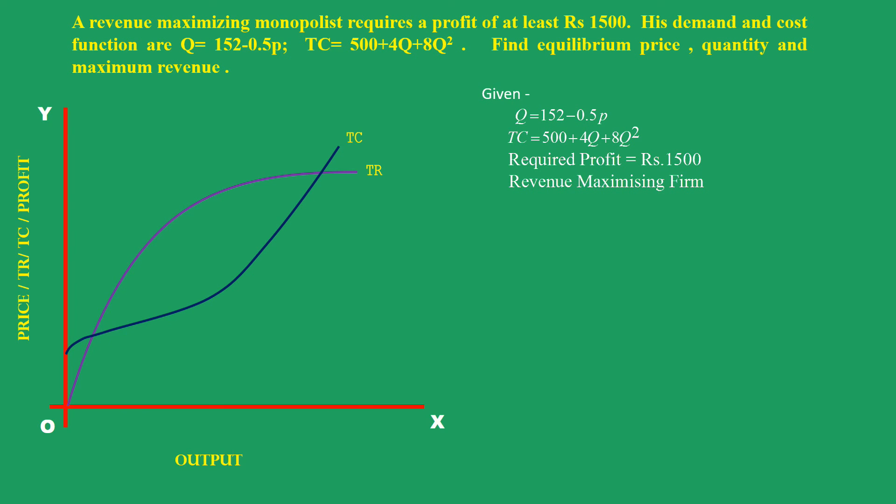Look at the graph for better understanding. It depicts the total cost and total revenue behavior of a monopoly firm. Profit is the difference between total revenue and total cost. We have the total cost function, but we can derive the total revenue function from the demand function. Let us rewrite the demand function as 152 - 0.5p = q.